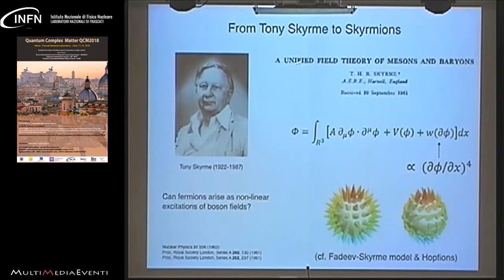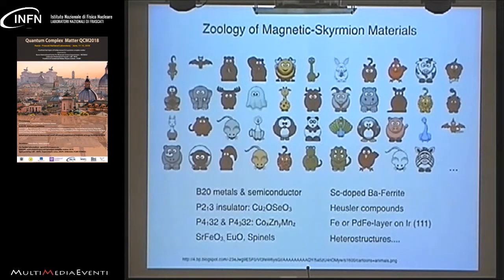The expression skyrmion actually comes from Tony Skyrme who was a nuclear theoretical physicist. He proposed a unified field theory for mesons and baryons, considering excitations of pion fields and describing them in terms of non-linear particle-like objects. The way you can think of it is this hedgehog - it has this topological character, you cannot comb the hedgehog and get rid of this wall which is interesting to us. The expression skyrmion is nowadays used in a very generous way for a lot of spin textures. There is a large zoology of magnetic skyrmion materials in which these types of objects are being observed, an incomplete list which I would like to cover in the next couple of slides.